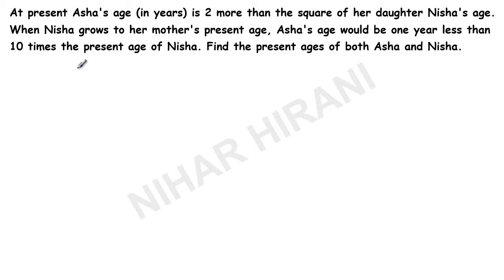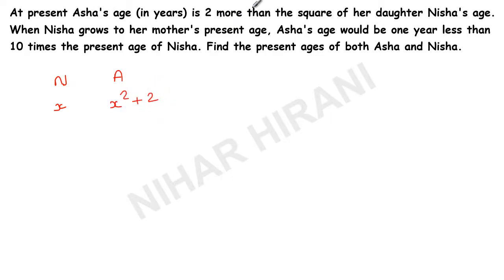So here we have two people. I will take variables for them. Let us say Nisha's age is x years — that's her present age. And Asha's present age is x squared plus two. Why? Because it's given in the question: two more than the square of her daughter. So daughter is x, then mother will be x squared plus two years.